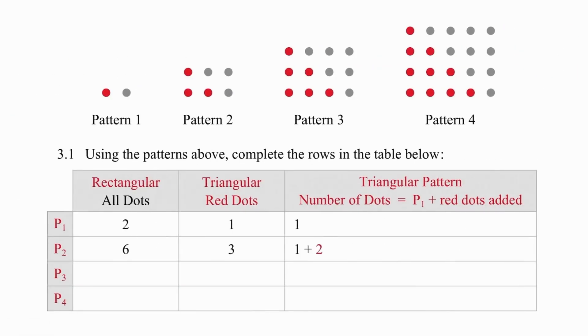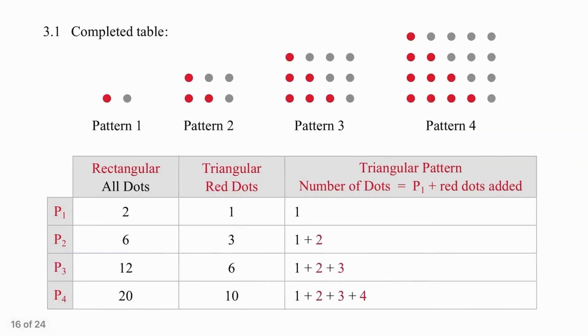Pause the video, try this on your own, and then we'll go through it together. If you're struggling a little bit with the rectangular counting, remember that this is 1 times 2, 2 times 3, 3 times 4, and 4 times 5. Also be observant and notice that the red dots are exactly half the total number. So every time you have an answer in the left column, you simply half that for the right column. And what we're adding is literally, for pattern 4, the first 4 numbers, 1 plus 2 plus 3 plus 4.